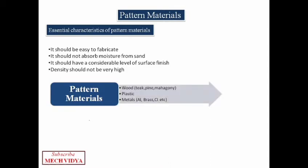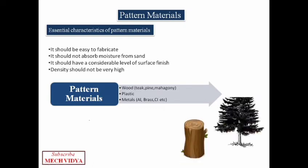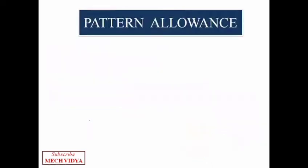So by satisfying all these criteria, we find that usually woods, plastics, and some metals can be used for pattern making. Usually wood from pine, teak, or mahogany trees are preferred. Now one more important aspect of pattern making is the pattern clearance or allowance.